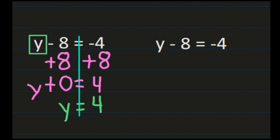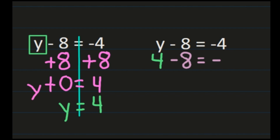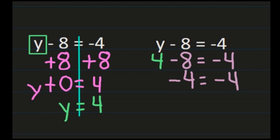We can check: substitute y equals positive 4 back into y minus 8 equals negative 4. We get 4 minus 8 equals negative 4. Using our rules for subtracting integers — 4 minus 8 is negative 4 — we get negative 4 equals negative 4. You can also keep the first number, change the subtraction to addition, and change the sign of the second number; that rule will give you the same answer.